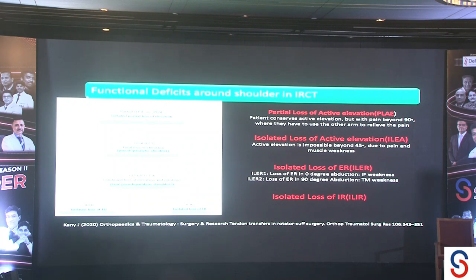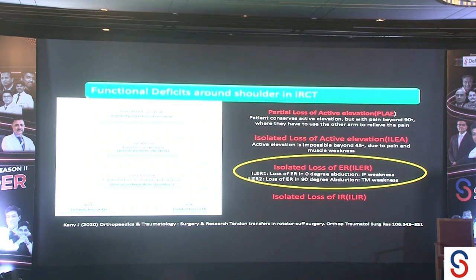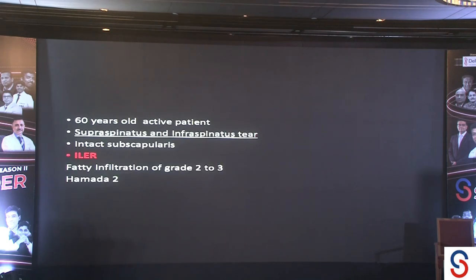Kenny's definitions are very helpful to understand what kind of deficit this patient has. His main issue is isolated loss of external rotation — his elevation is full, only slightly weak due to supraspinatus involvement, but not a complete loss. He has full movements but has lost complete external rotation power. So his main loss is isolated loss of external rotation. For this 60-year-old patient with supra and infraspinatus tear, intact subscapularis, isolated functional loss of external rotation, grade 2-3 fatty infiltration, and Hamada stage 2, I opted for tendon transfer.